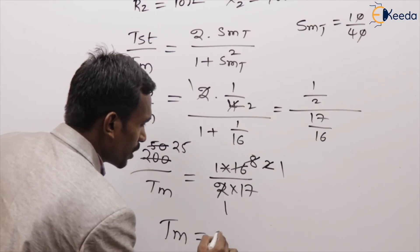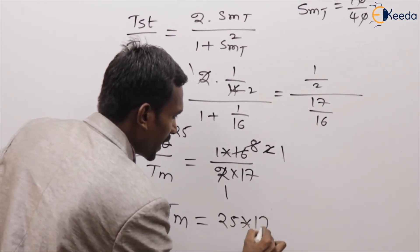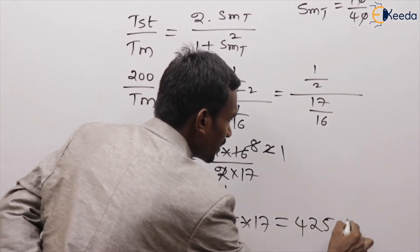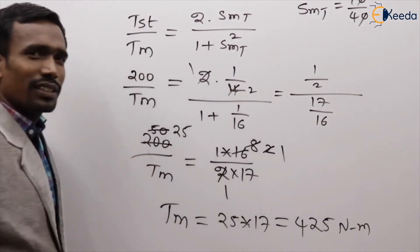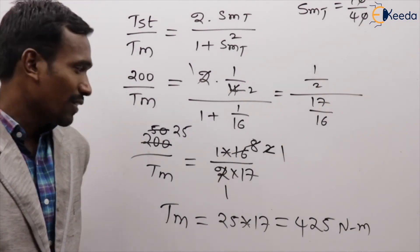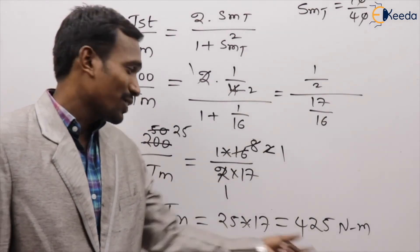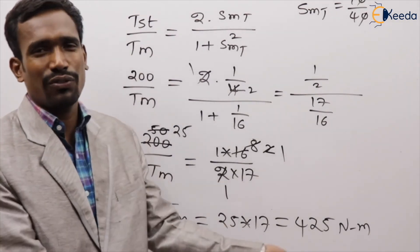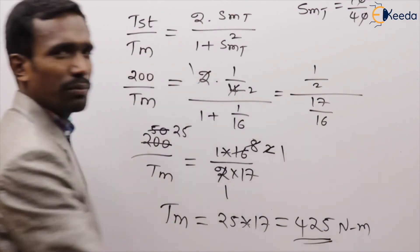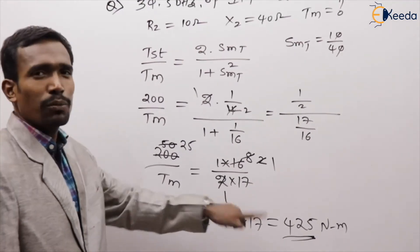Maximum torque = 25 × 17 = 425 Newton meters. The maximum torque should always be greater than starting torque, which confirms 425 Nm is correct.